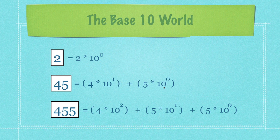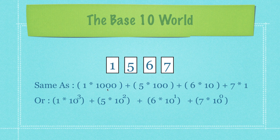10 to the power of 0 is equal to 1, asking how many 1's we need to create our final number. 10 to the power of 1 asks how many 10's we need. So if we take 40 plus 5, that's how we get 45. 10 to the power of 2 asks how many 100's we need. We have 1000 instead of 10 to the power of 3, 100 instead of 10 to the power of 2, 10 instead of 10 to the power of 1, and 1 instead of 10 to the power of 0. That is how our number system works.